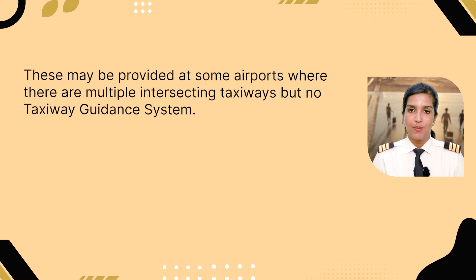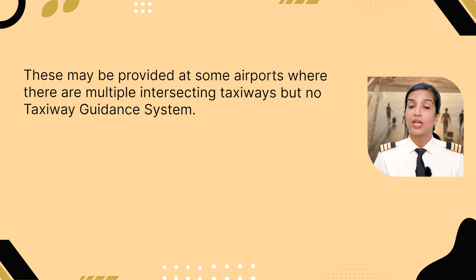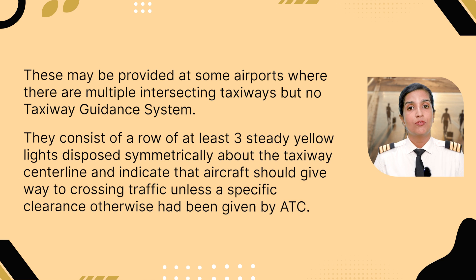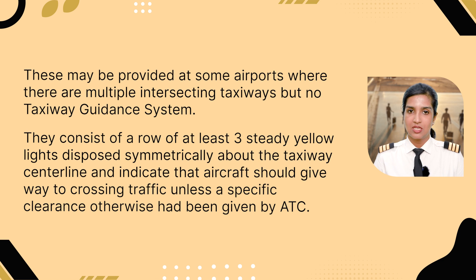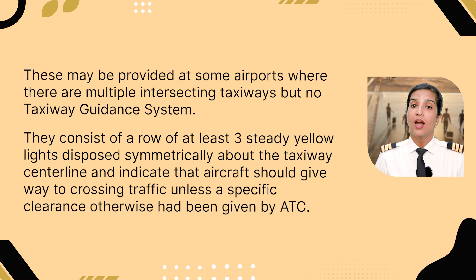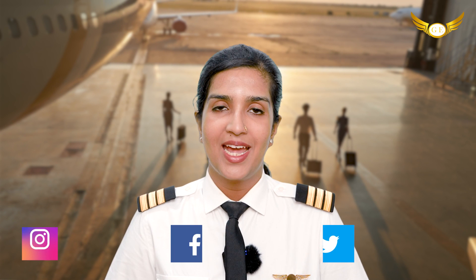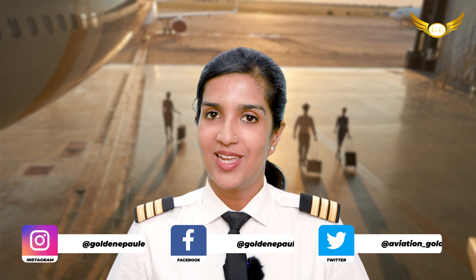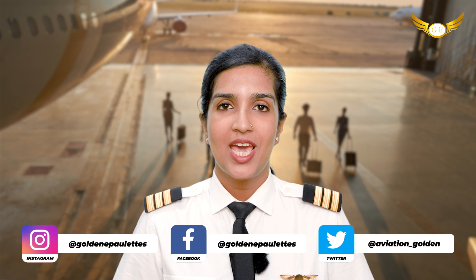We also have taxiway intersection lights. These may be provided at some airports where there are multiple intersecting runways but no taxiway guidance system. They consist of a row of at least three steady yellow lights disposed symmetrically about the taxiway centerline, and indicate that an aircraft should give way to the crossing traffic unless a specific clearance has been given by the ATC.